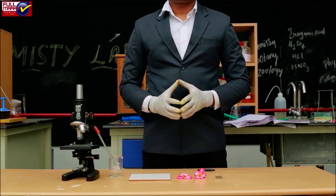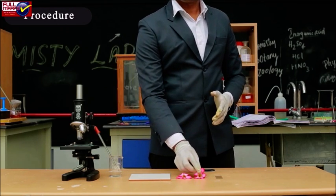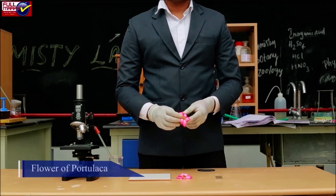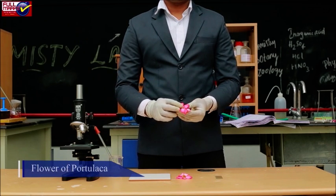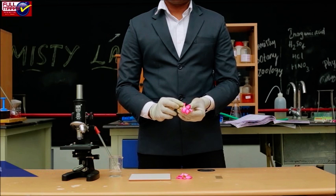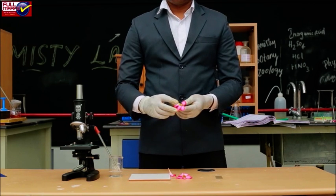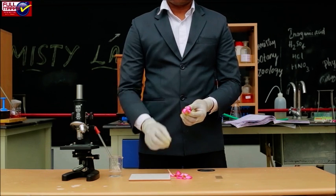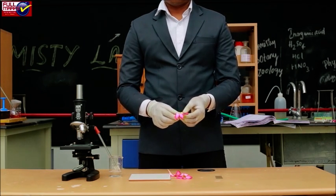Procedure: The pollen grains on anthers are haploid and represent first cell of the male gametophyte. They show great variations in shape, size and sculpting. These features are helpful in the study of pollen grains and is called palynology.